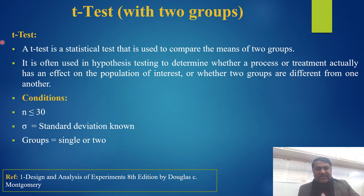So, what is the t-test? The t-test is a statistical test used to compare the means of two groups. It is often used in hypothesis testing to determine whether a process or treatment has an effect on the population of interest, or whether two groups are different from one another. You can apply the t-test when the sample size n is less than or equal to 30, the standard deviation is known, and there is one or two groups.